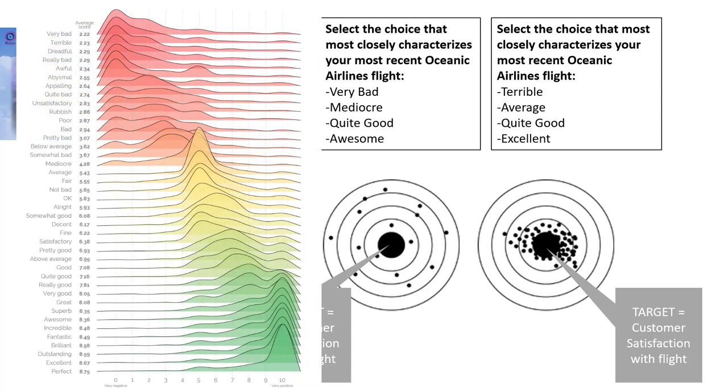The reason for this difference can be understood because of an interesting study conducted by YouGov. YouGov did a study where they presented respondents with a list of descriptive words: very bad, somewhat bad, alright, quite good, awesome, incredible, and the like.